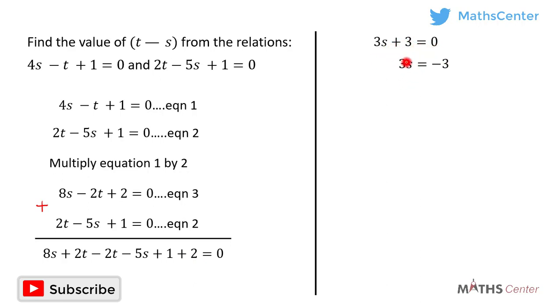This will give us 3x equals negative 3. To get x, I'll divide both sides by 3, and that will give us x equals negative 3 divided by 3, which is negative 1. So the value of x is negative 1.